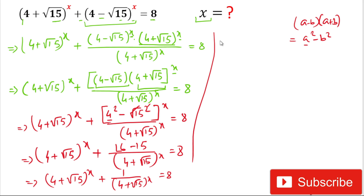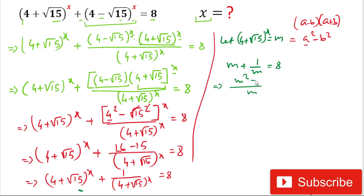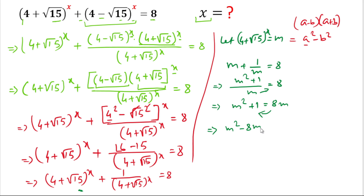To simplify further, we let m = (4 + √15)^x. Our new equation becomes m + 1/m = 8. Taking the LCM, we get (m² + 1)/m = 8. Cross-multiplying gives m² + 1 = 8m, and rearranging: m² − 8m + 1 = 0.